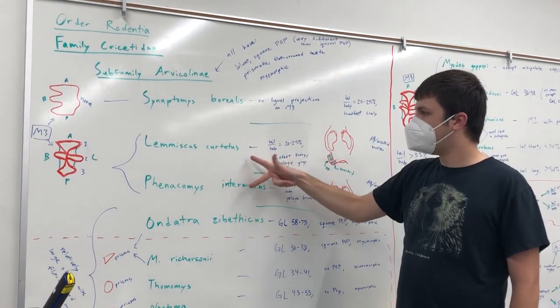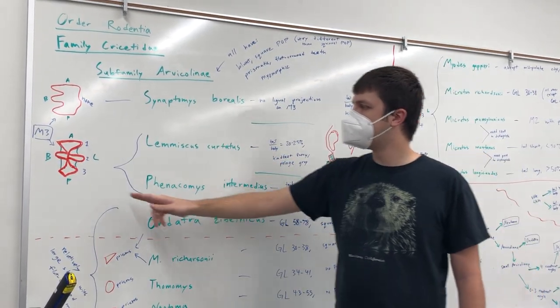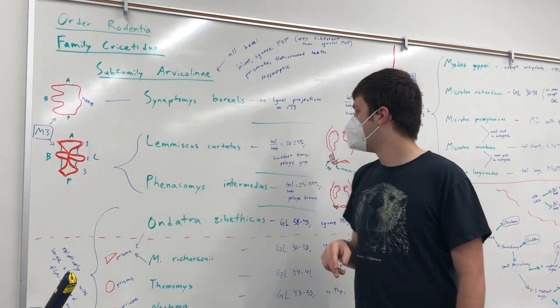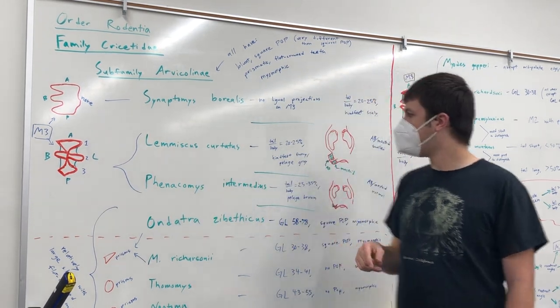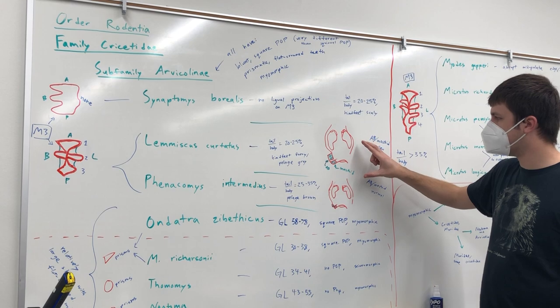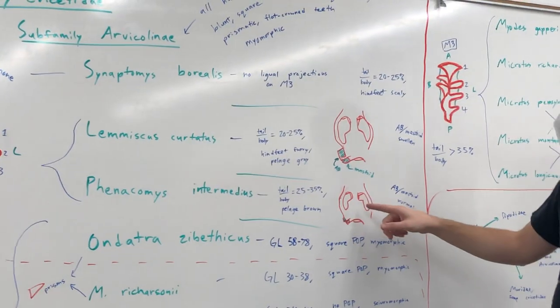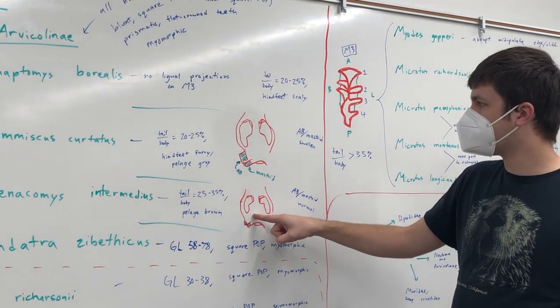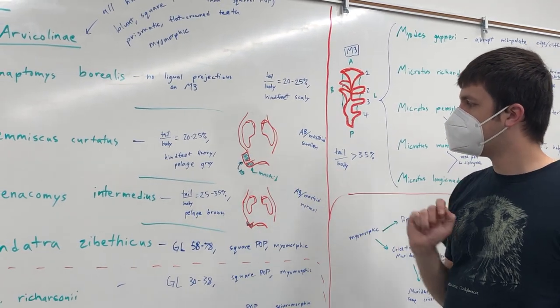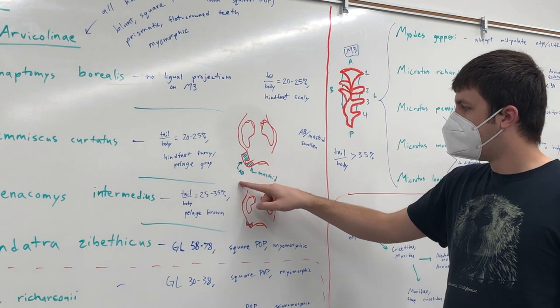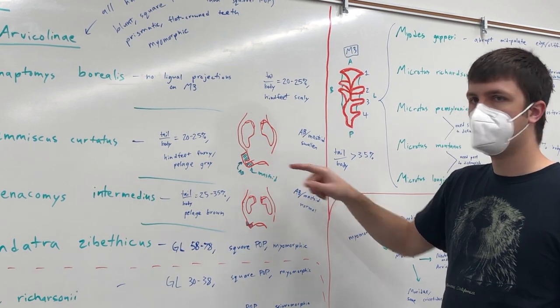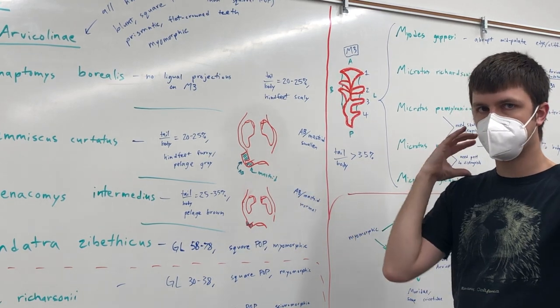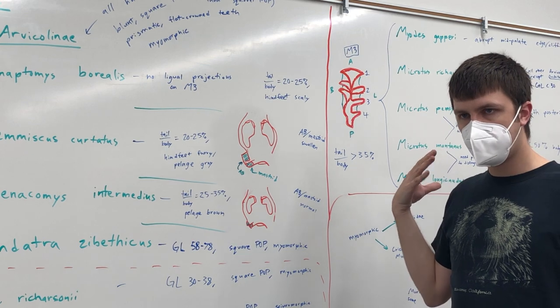For these two that have similar third molars, what we want to look at is kind of a top-down view of the skulls. What we see with Phenacomys intermedius is it looks like a regular vole skull. With Lemiscus curtatus, the auditory bullae and mastoid are swollen, so that the back of the skull is a little bit bulged out and more of a boxy look.